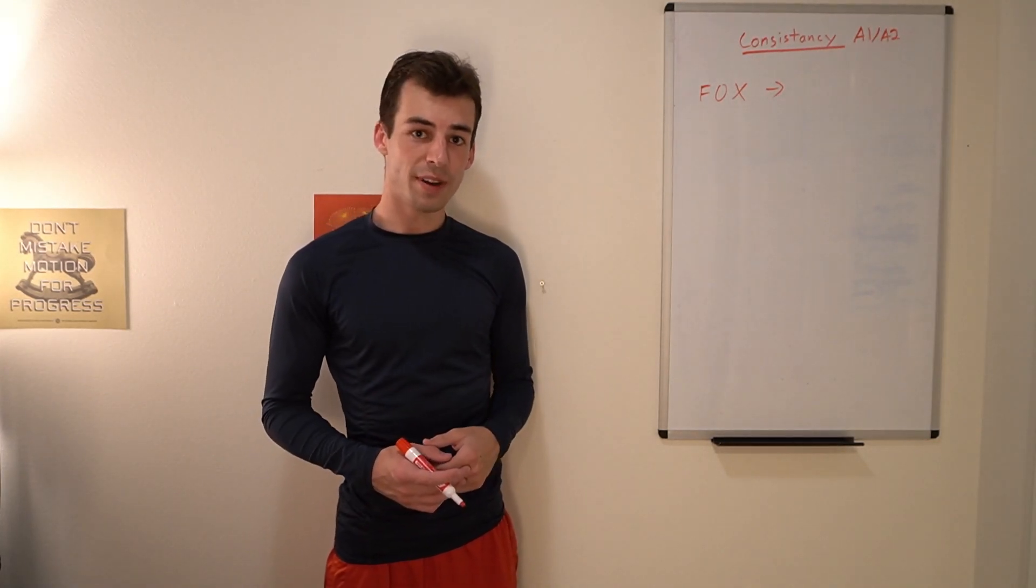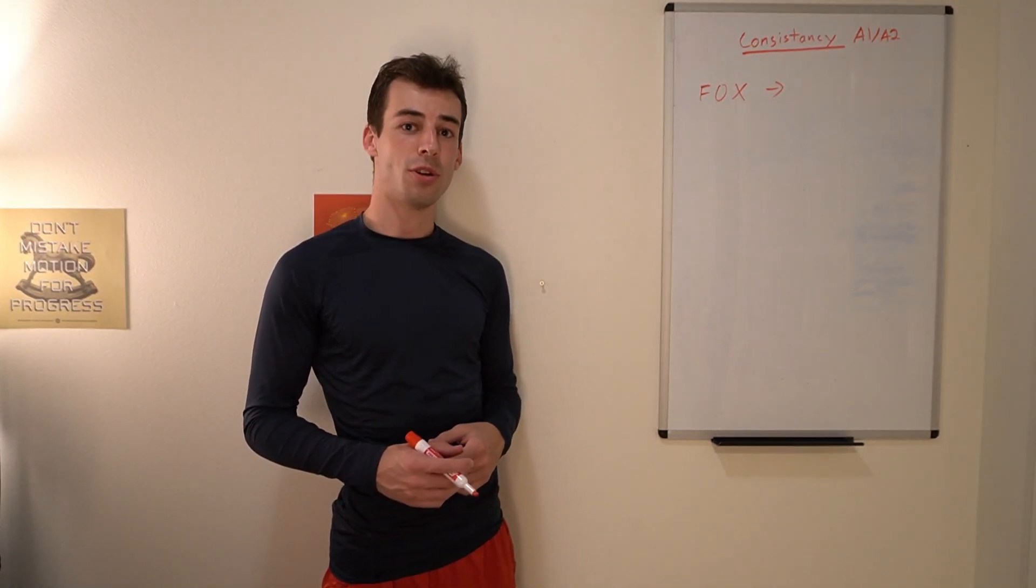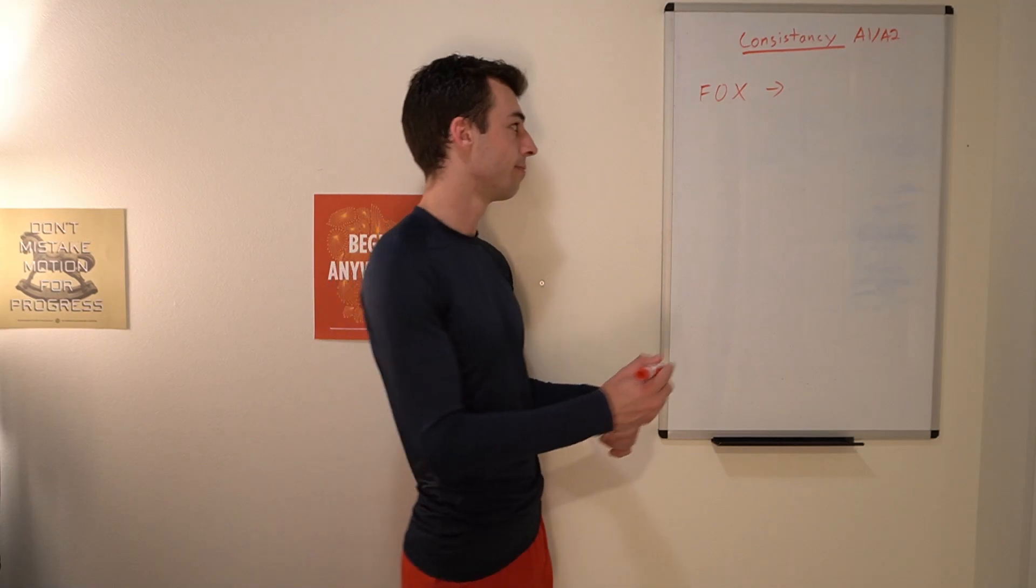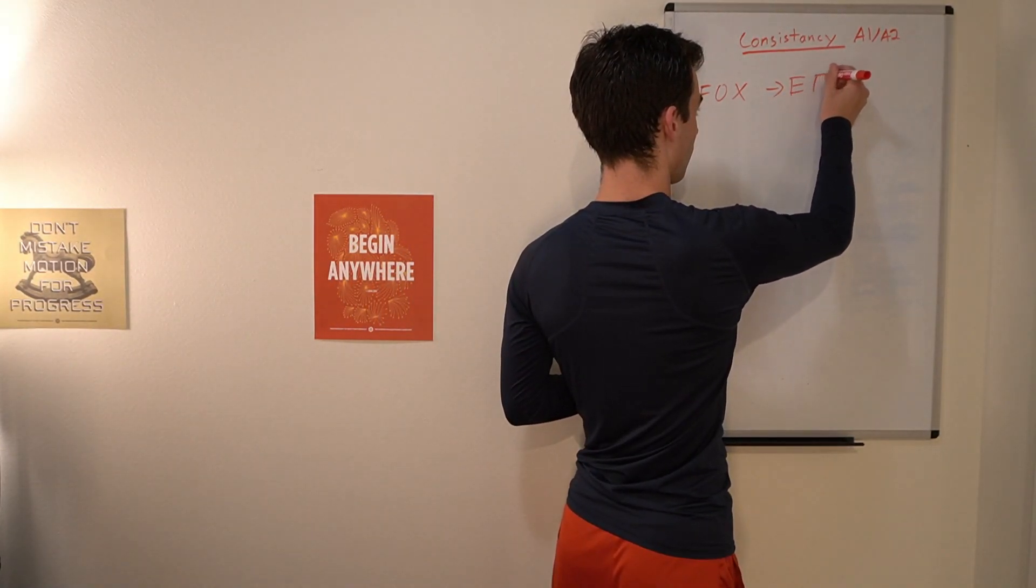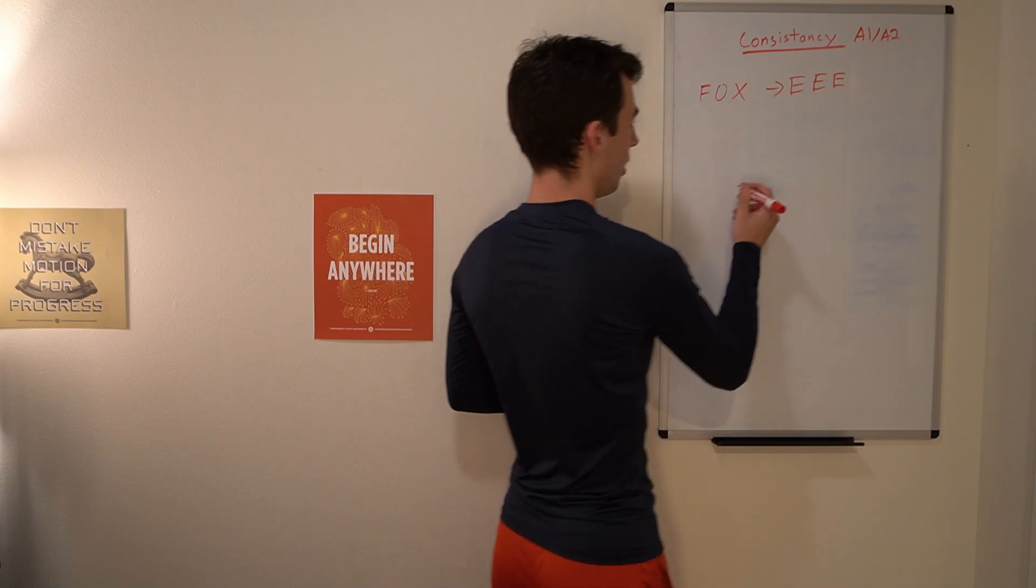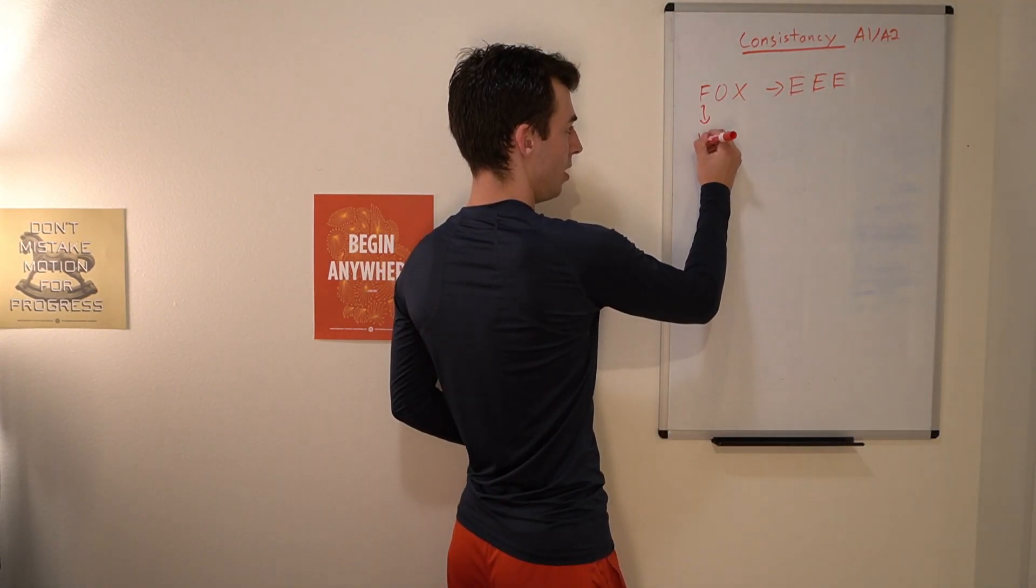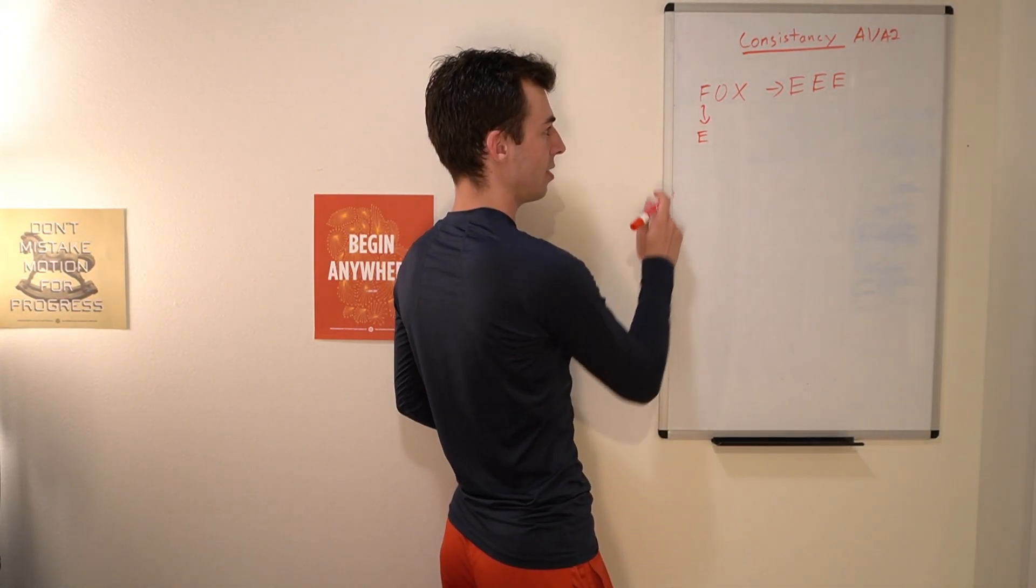For example, let's look at the string fox and let's say hypothetically we want to turn it into the string all E's. The F we can turn directly into an E in just one second because we're turning a consonant into a vowel.